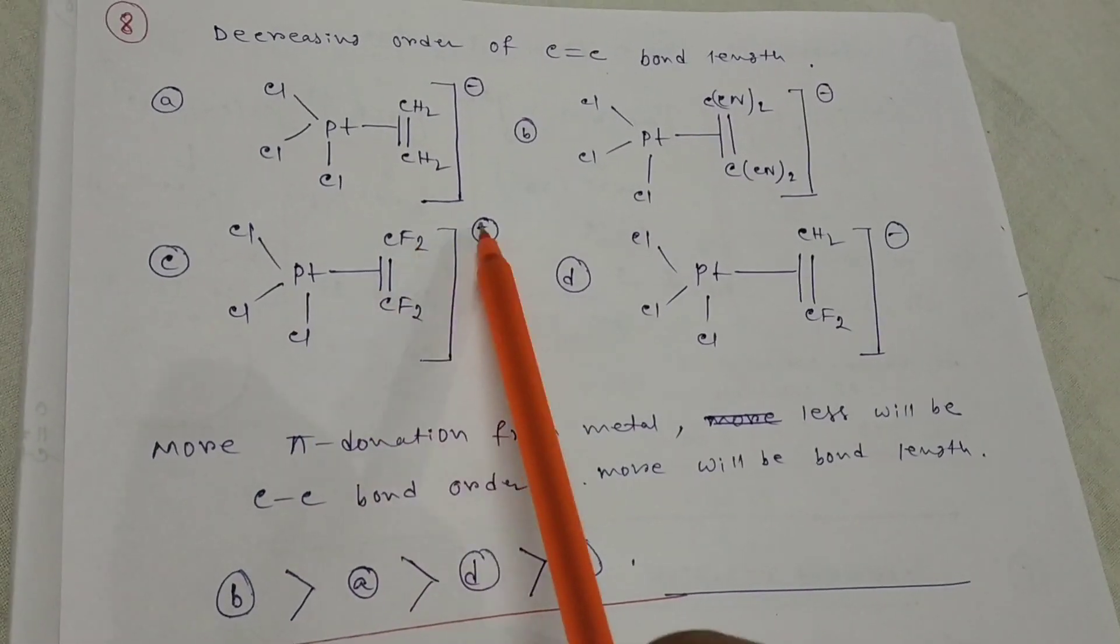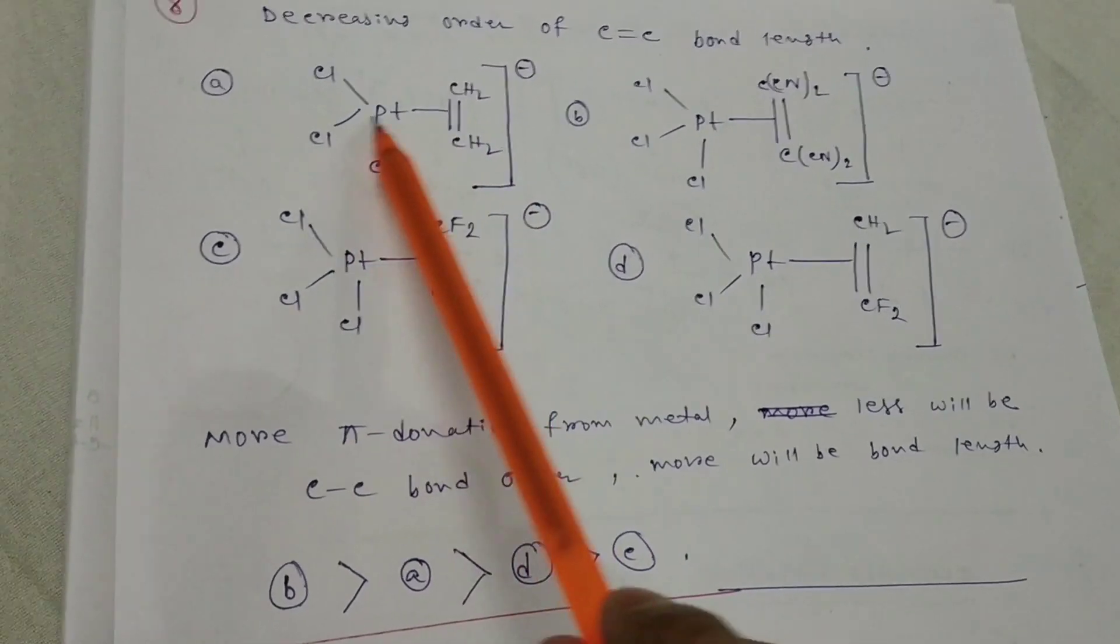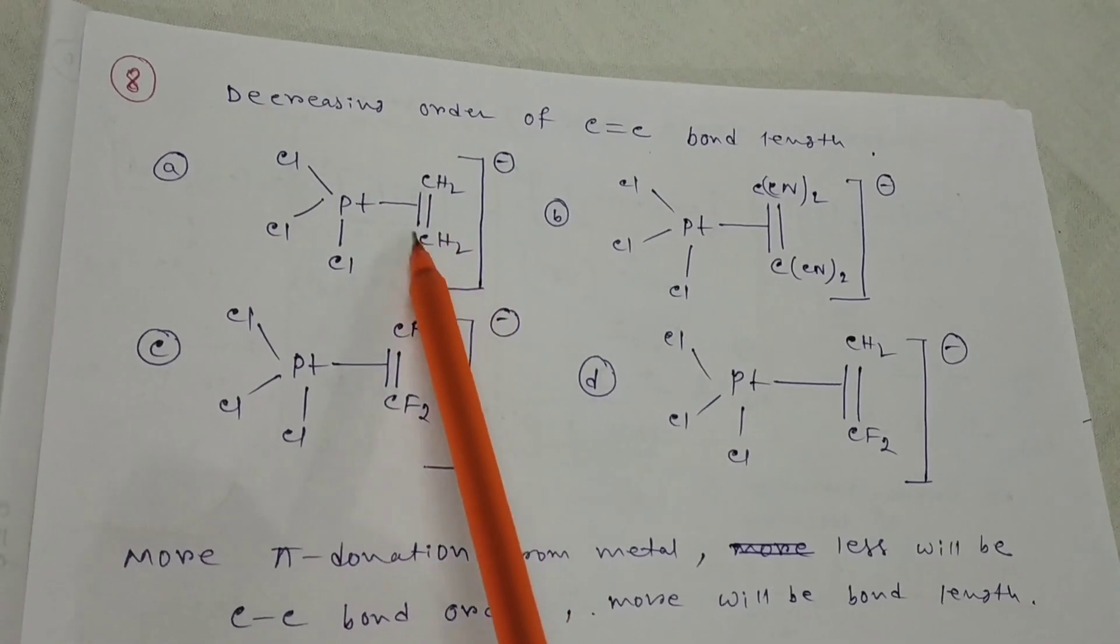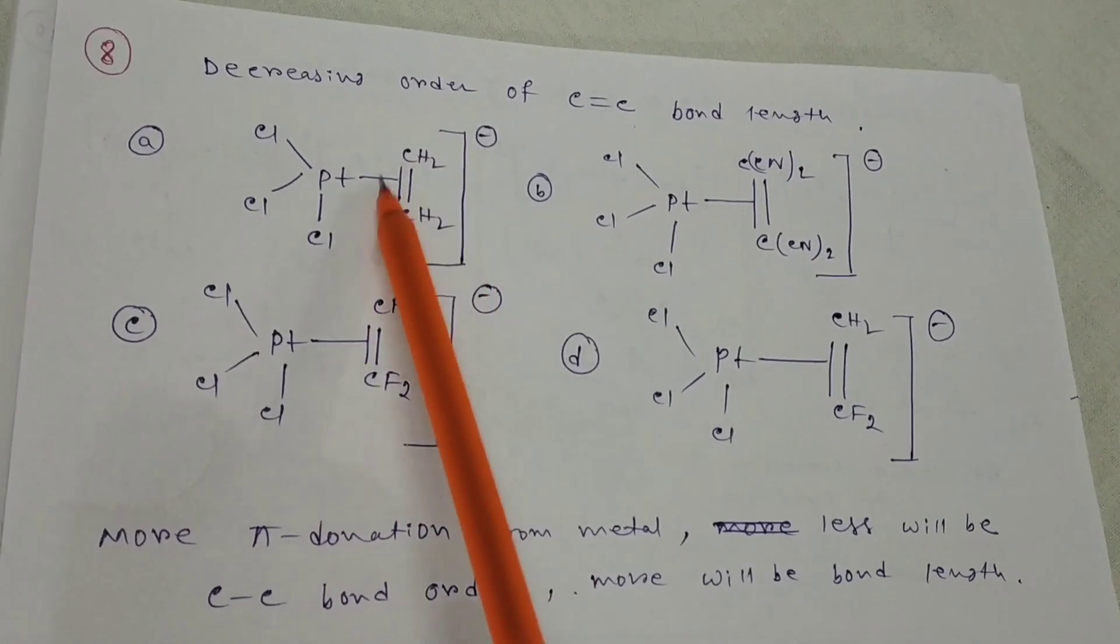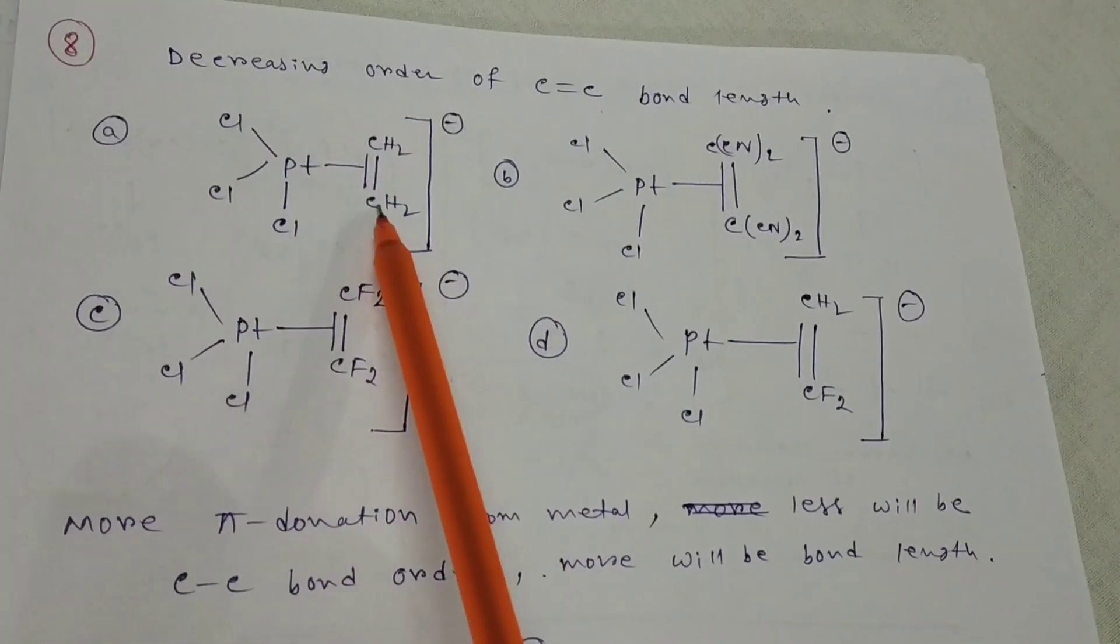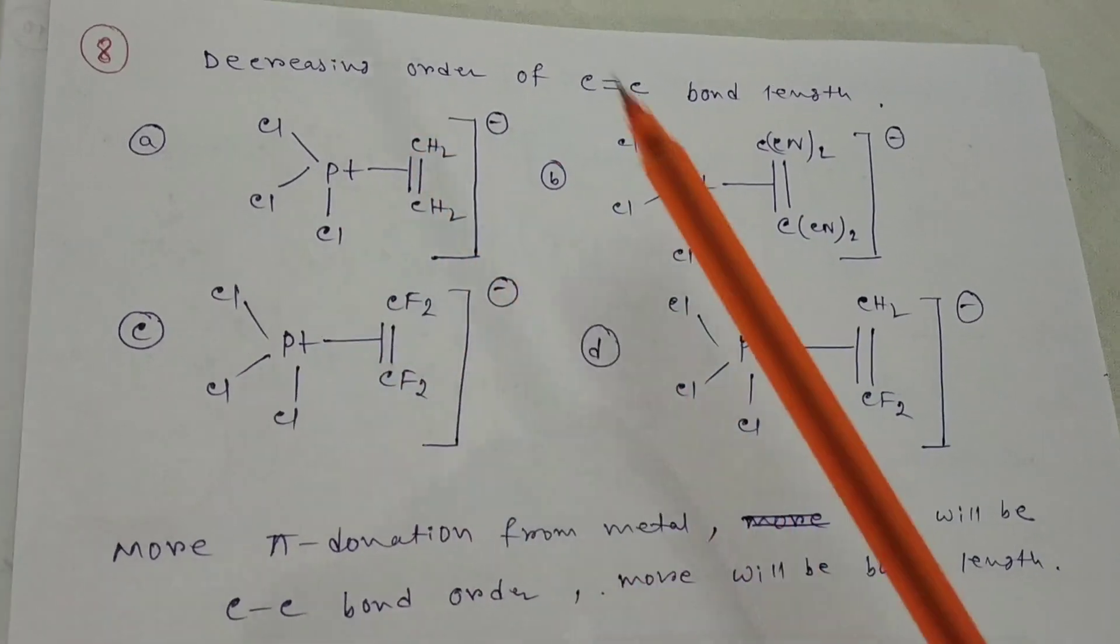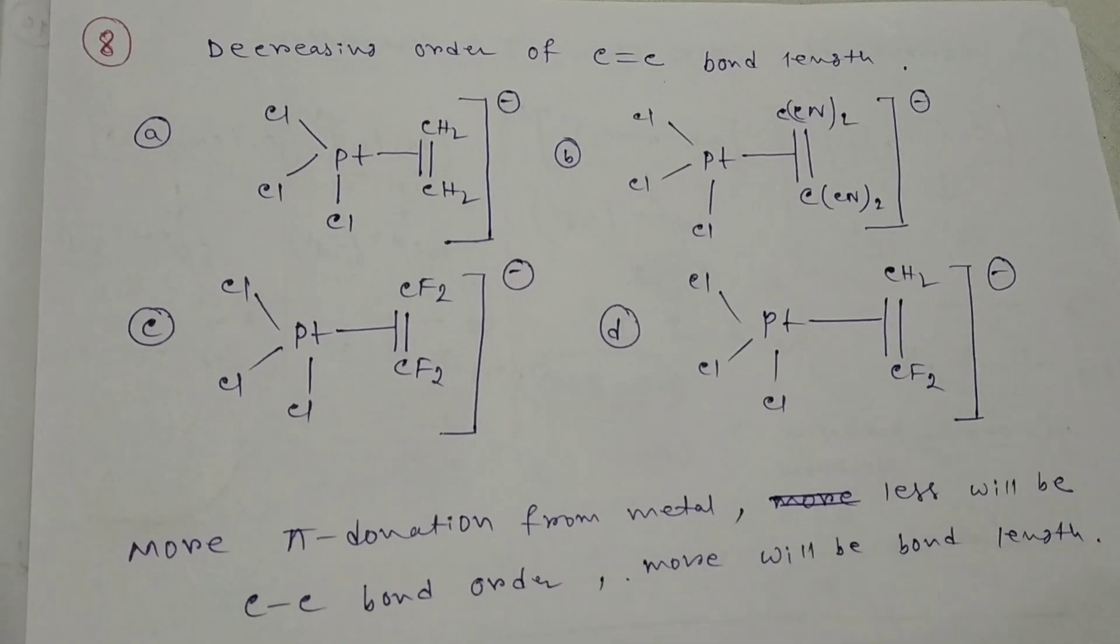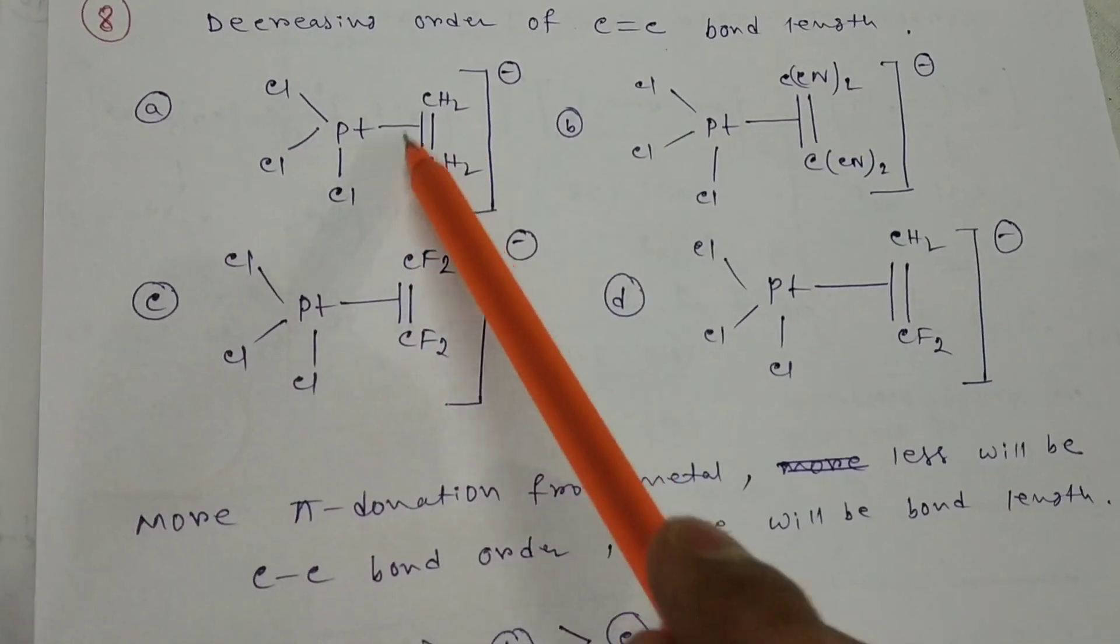The eighth question: decreasing order of C=C bond length. Bond length depends on pi backbonding. When metal to ligand pi backbonding happens from metal d orbital to ligand pi star orbital, this bond will be breaking. When platinum d electrons go to the pi star of carbon, bond order will be lower and bond length will be higher. More pi donation means less CC bond order and more bond length. When pi backbonding is high, bond order becomes lower and bond length becomes higher.